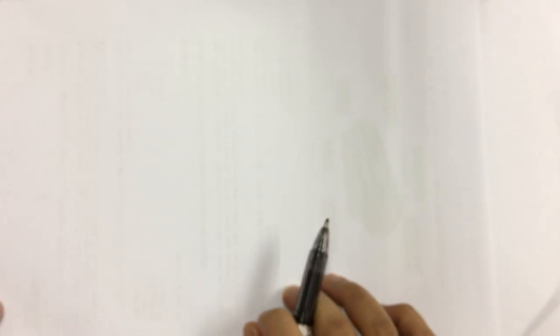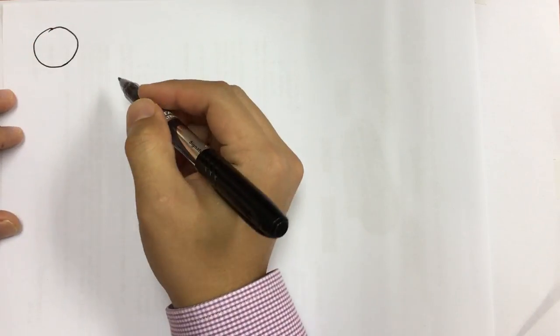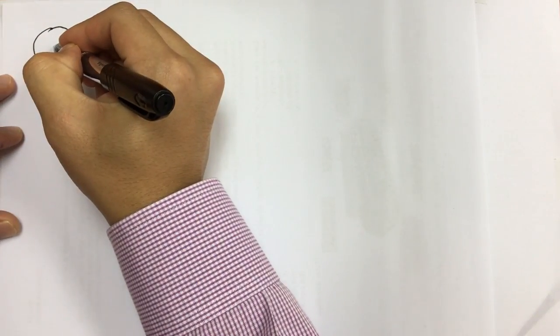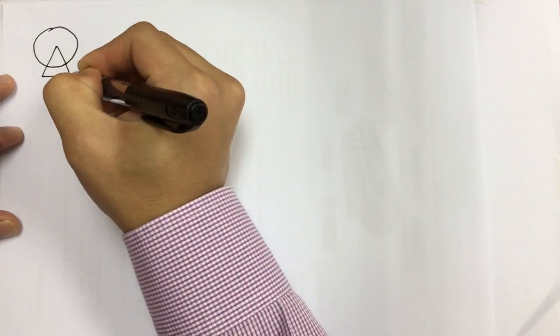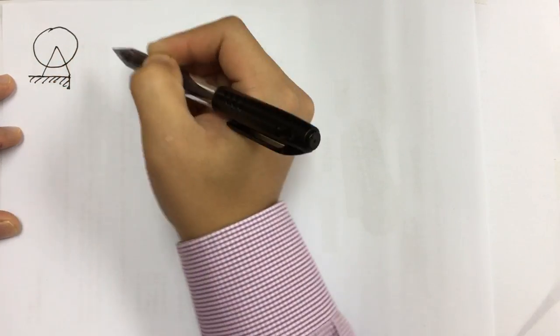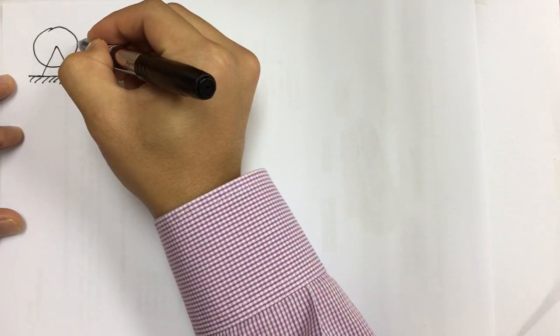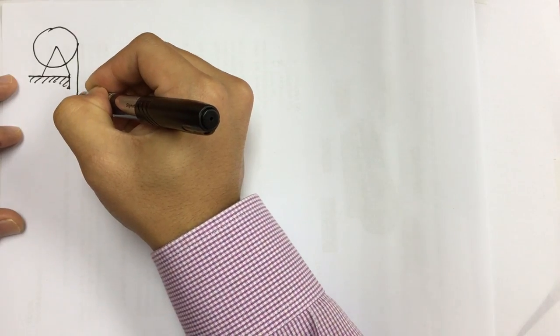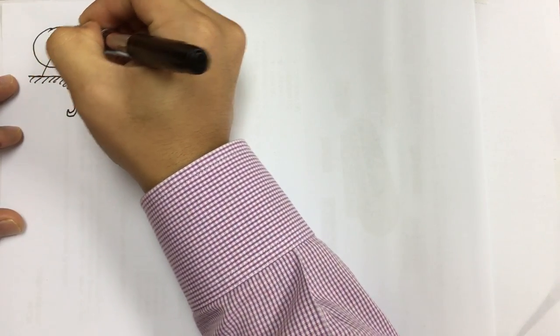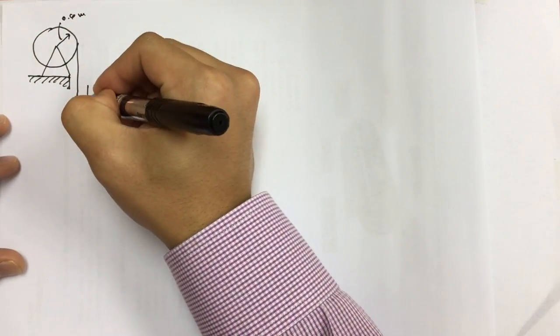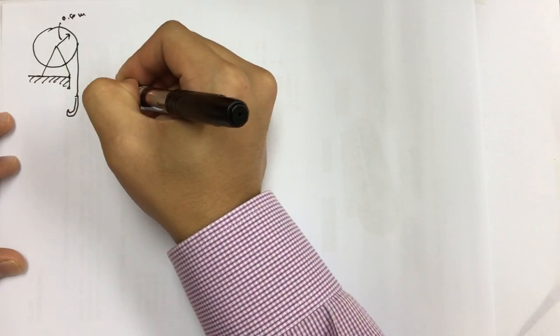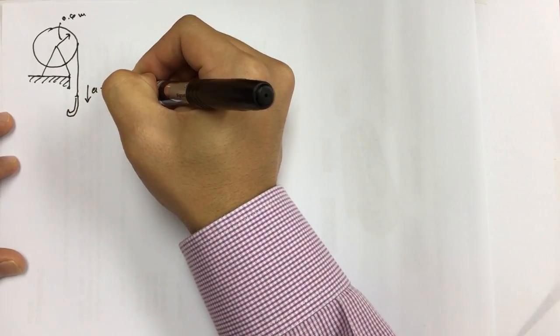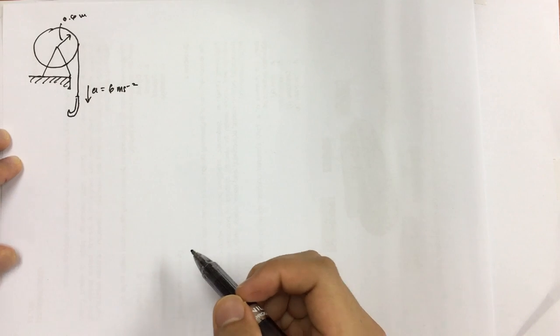To answer this problem, we're going to draw the situation. So this is basically the drum — this is how the drum is installed. Then we have the hook going downward, and this is the radius which is 0.6 meters. The acceleration a equals 6 meters per second squared. So this is the information we have.